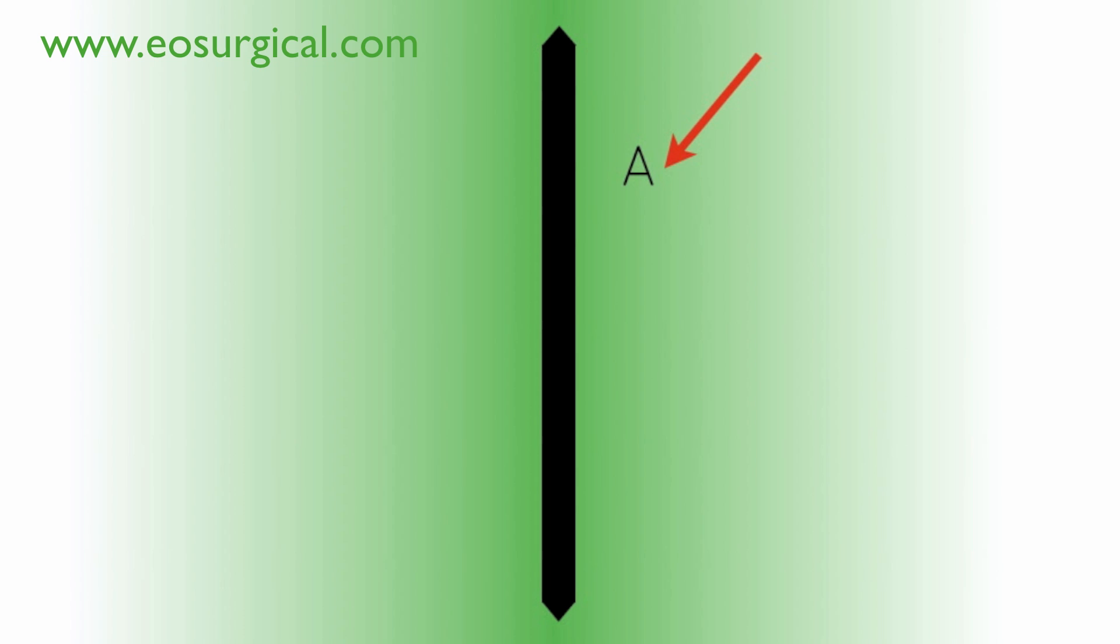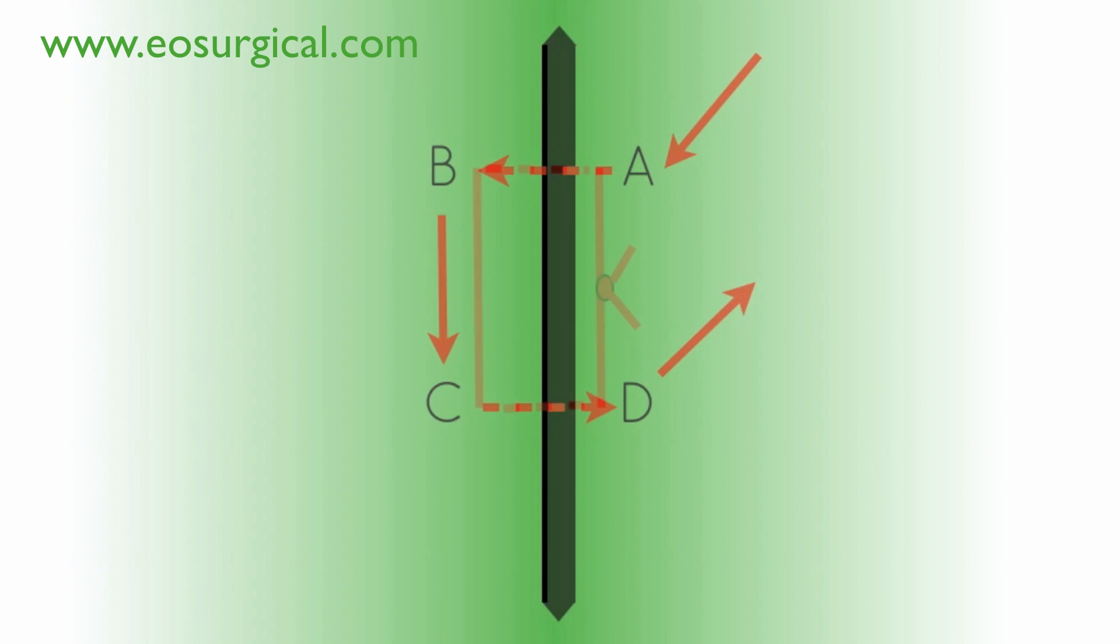So, let's recap what we've looked at here. Suture enters at A and exits at B. Passes back into the tissue at C before exiting at D. A and D are then tied together. And this forms a horizontal mattress suture.